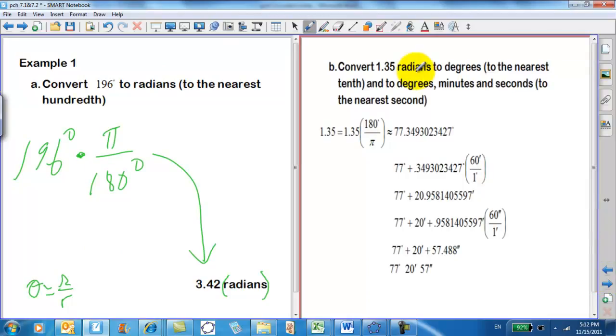Now, convert 1.35 radians to degrees to the nearest tenth, and to degrees, minutes, and seconds to the nearest second. Normally you just take your 1.35, multiply it by 180 degrees over pi, and you get your approximate answer of 77.3 degrees. Those of you interested in going into geography and coordinate systems and maps might be interested in how these fractional degrees are turned into minutes by multiplying by 60, and then fractional minutes are turned into seconds by multiplying by 60 again. So it's 77 degrees, 20 minutes, 57 seconds.